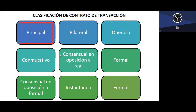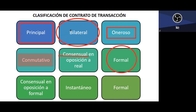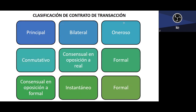The contrato de transacción is a principal contract because it is the agreement parties reach to resolve a present or future conflict. It cannot be unilateral — both parties must agree. It is oneroso because there are reciprocal rights and obligations, and conmutativo because both parties know the prestaciones from the moment of celebration. It is consensual because consent suffices, and formal because it must be made in writing before an authority or fedatario público.